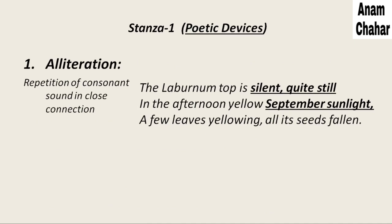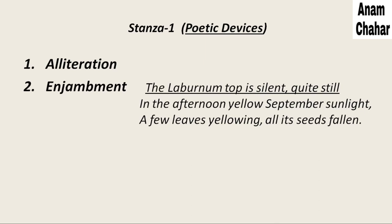Now let's discuss the poetic devices. In stanza 1, as you can see the stanza on the right-hand side of your screen — silent, still — alliteration is used here. Alliteration means repetition of consonant sound in close connection. The 'S' sound is repeated in 'silent' and 'still.' Also, 'September sunlight' — again the 'S' sound is repeated, so it is another example of alliteration. Enjambment has also been used: when no punctuation mark is used after the end of a line and the same idea continues to the next line in a poem, it is called enjambment. There is no punctuation mark, no full stop, no comma after the first line.